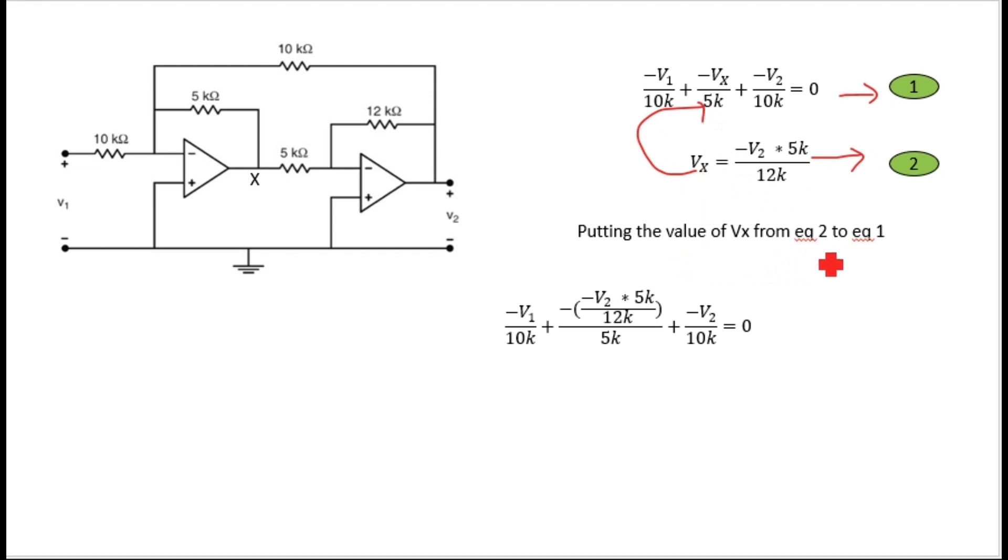On putting the value of Vx from equation two to equation one: minus V1 divided by 10k, plus minus Vx divided by 5k. We put the value of Vx here, minus V2 by 10k. The 5k and 5k will cancel out and this will become minus V2 divided by 12k.